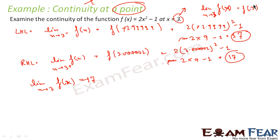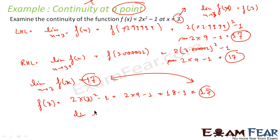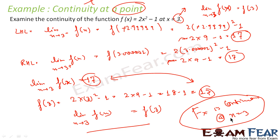Now I have to check if that limit value is equal to f(3). So f(3) is nothing but 2 into 3² minus 1, that is 2 into 9 minus 1, which is 18 minus 1 equals 17. So these values are equal. Since the limit as x tends to 3 equals f(3), the function is continuous at x is equal to 3. Please note that x equal to 3 is the specific point at which we discuss continuity.